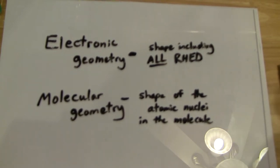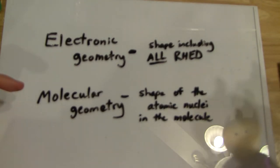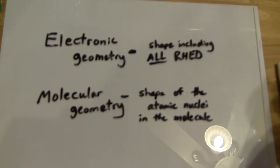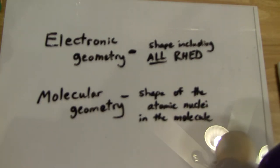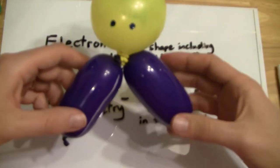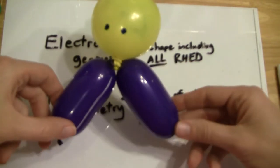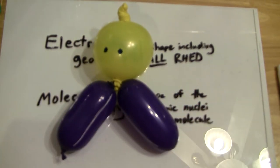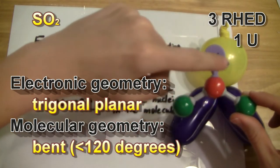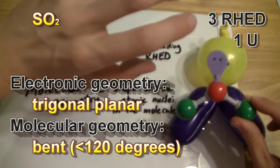The VSEPR theory allows us to quickly predict the electronic geometry and molecular geometry of a molecule based on the chemical formula. Once you have a Lewis structure, you can figure out the electronic and molecular geometry. The electronic geometry is the shape of a molecule including all regions of high electron density. Let's consider sulfur dioxide: if we had a central sulfur with two oxygen atoms surrounding it, the electronic geometry would be three regions of high electron density — trigonal planar.